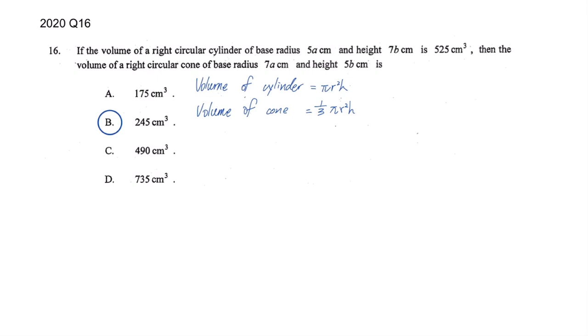First line: the volume of a right circular cylinder of base radius 5a and height 7b. So what is a right circular cylinder? Let's draw that first.